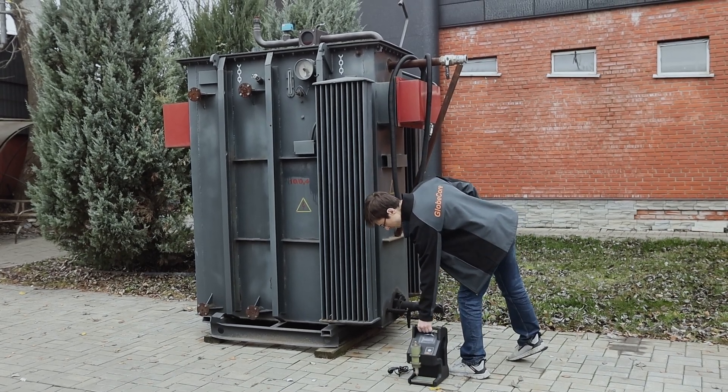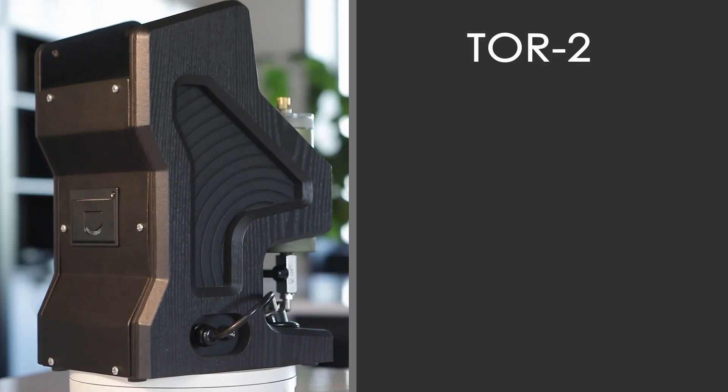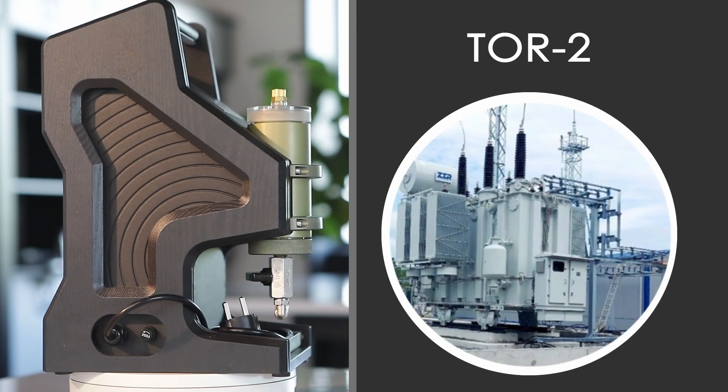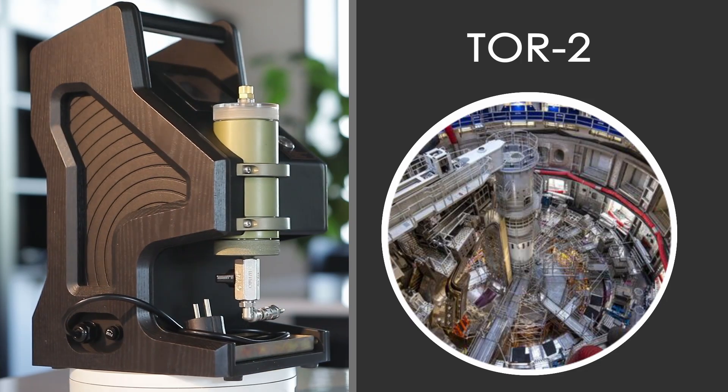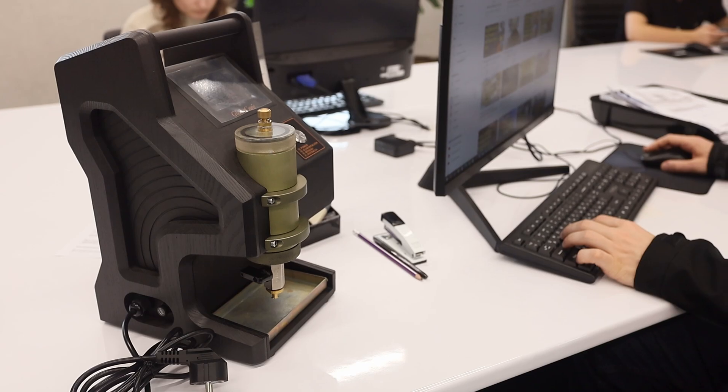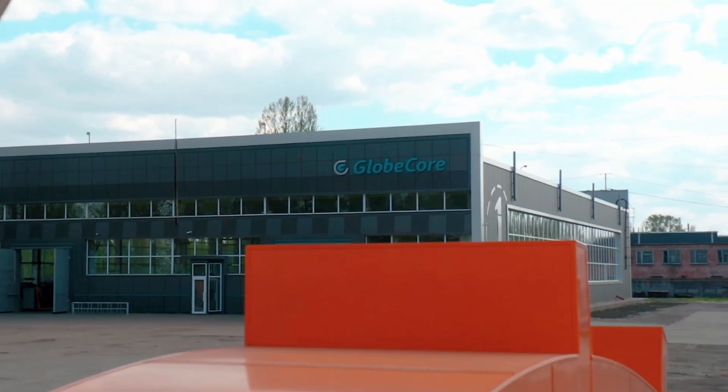Also, TOR-2 can detect defects in cables, high voltage bushings, reactors, and on-load tap changers. Visit www.globecore.com right now to learn more about the devices made by GlobeCore technology and to order them.